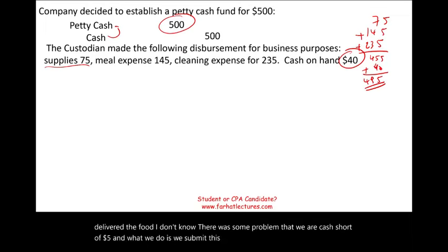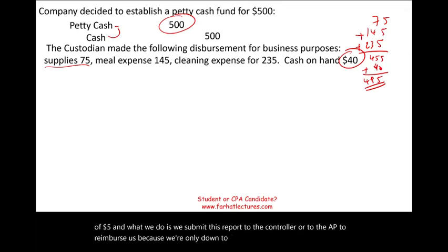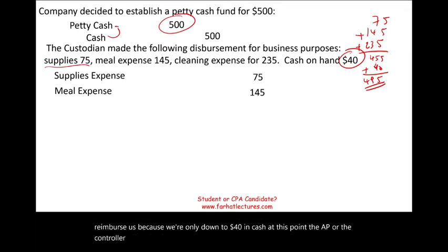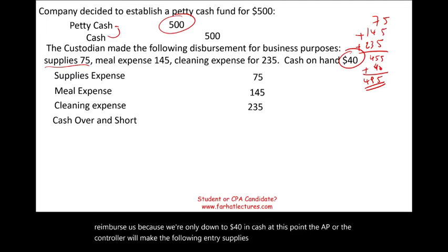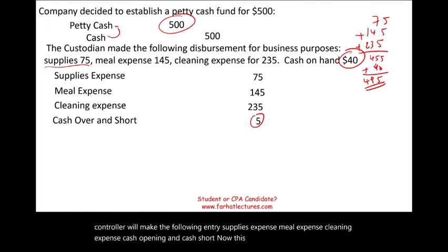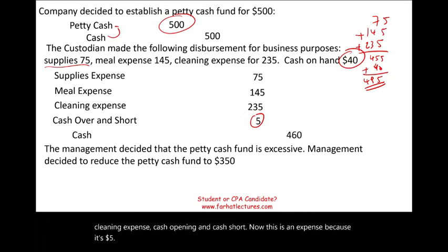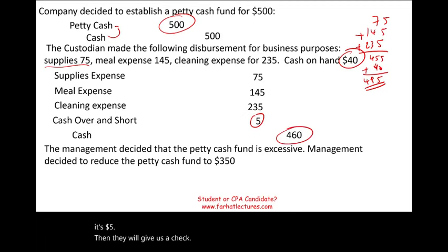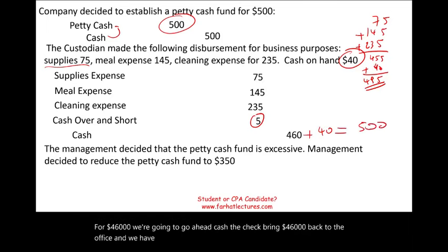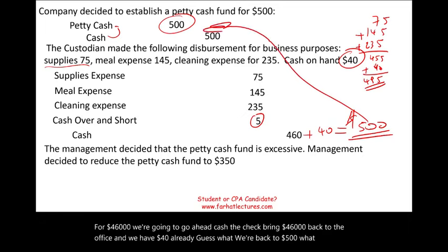We submit the report to the controller or AP to reimburse us since we're down to only $40 in cash. The AP or controller makes the following entry: debit supplies expense, meal expense, cleaning expense, and cash over and short for $5 — which is an expense. They issue a check for $460, we cash it, bring $460 back to the office, and combined with the $40 already on hand, we're back to $500.